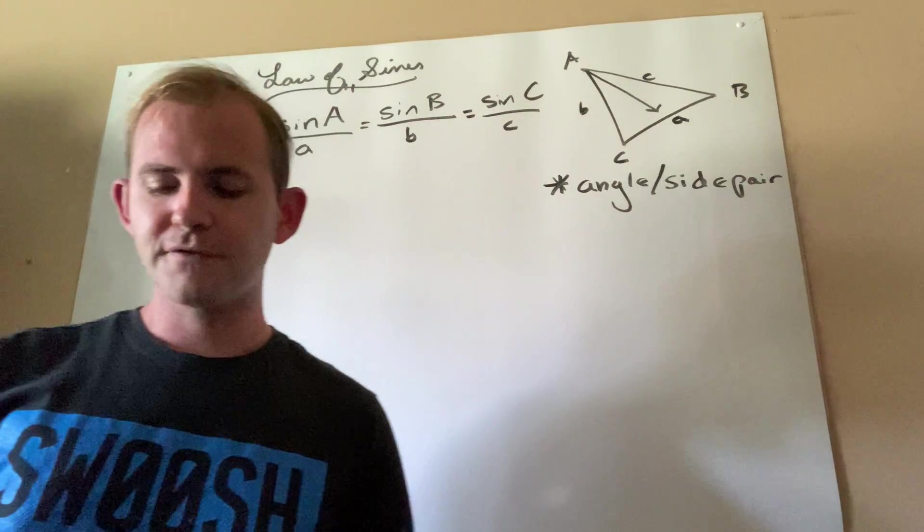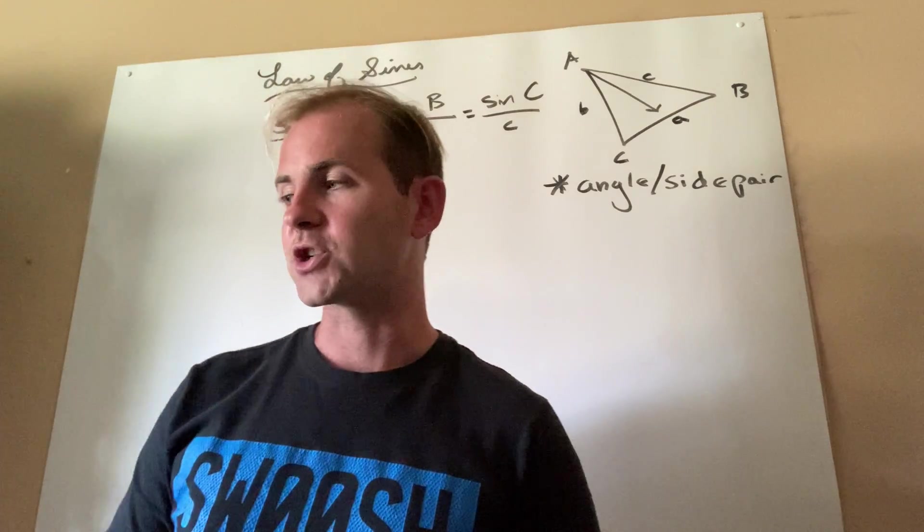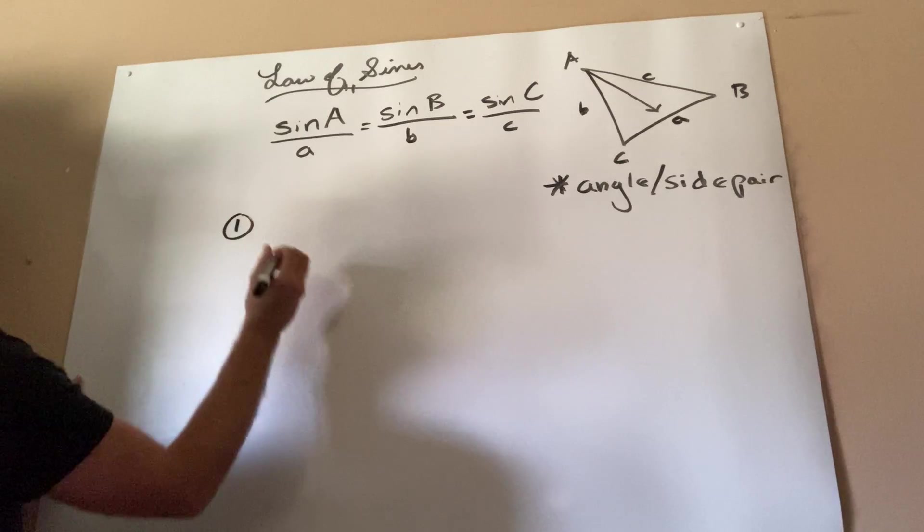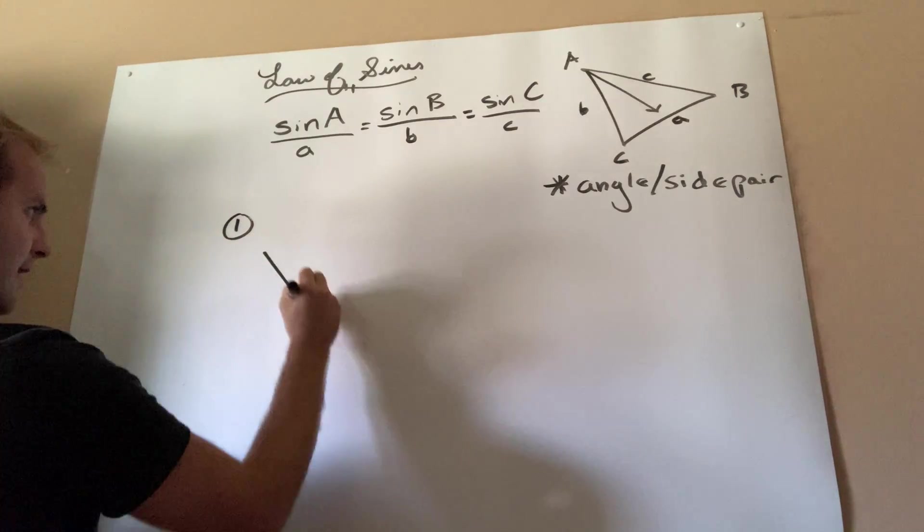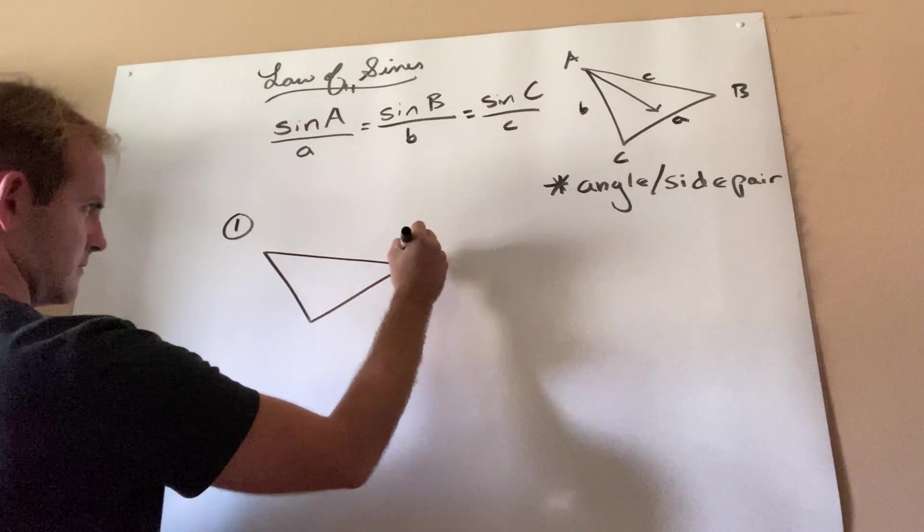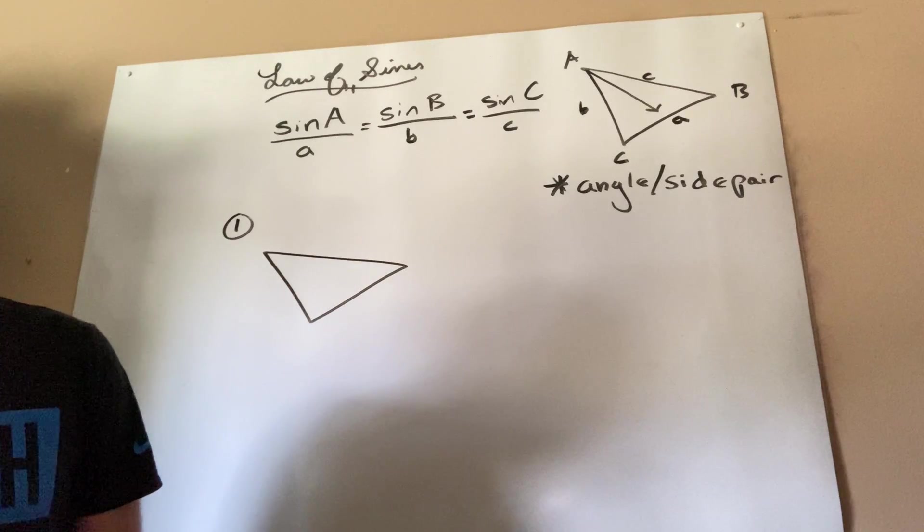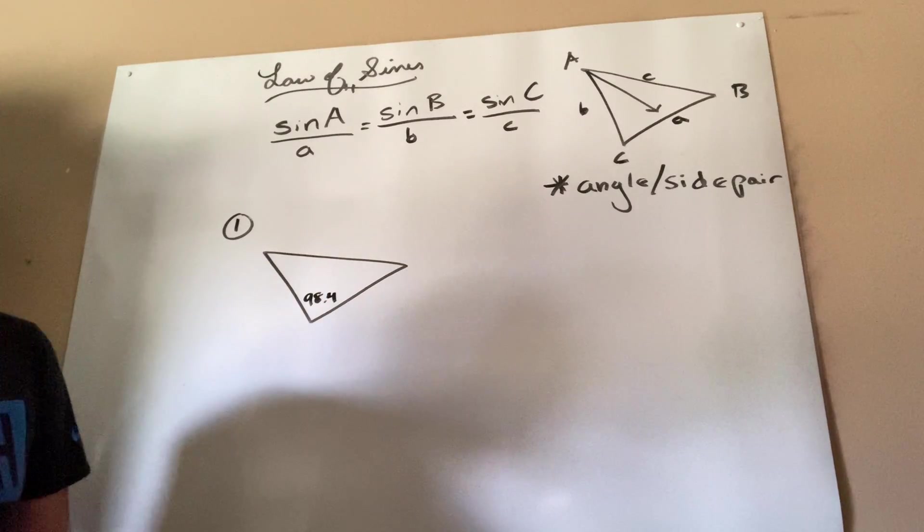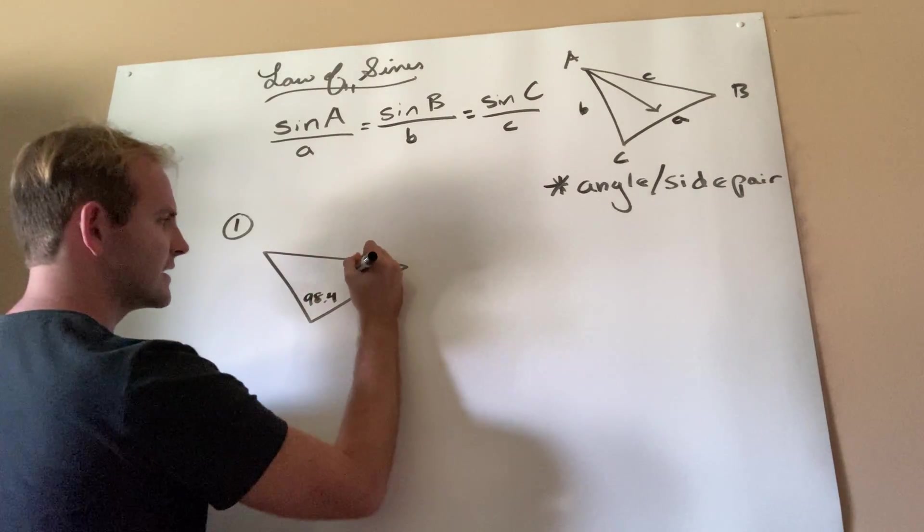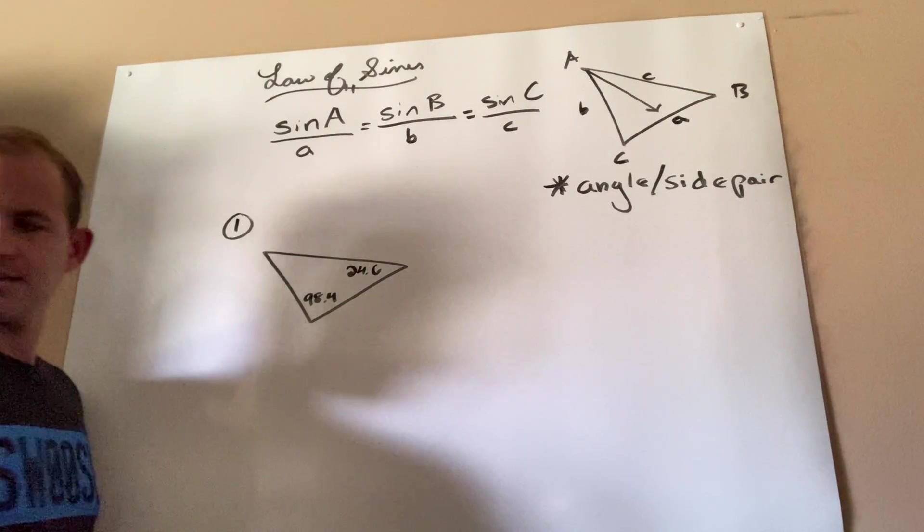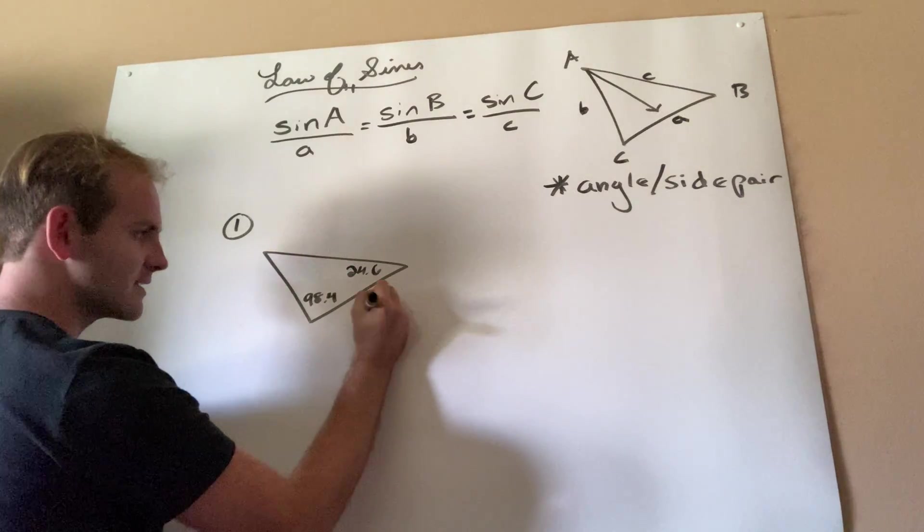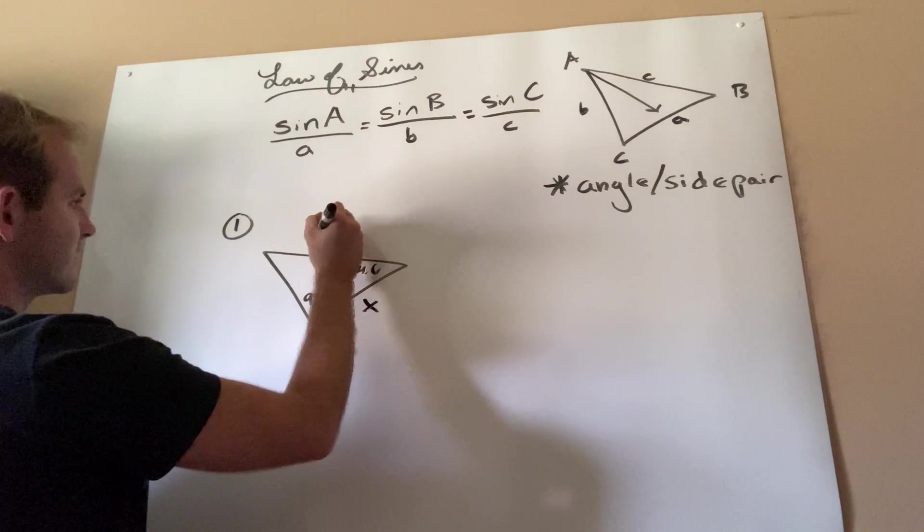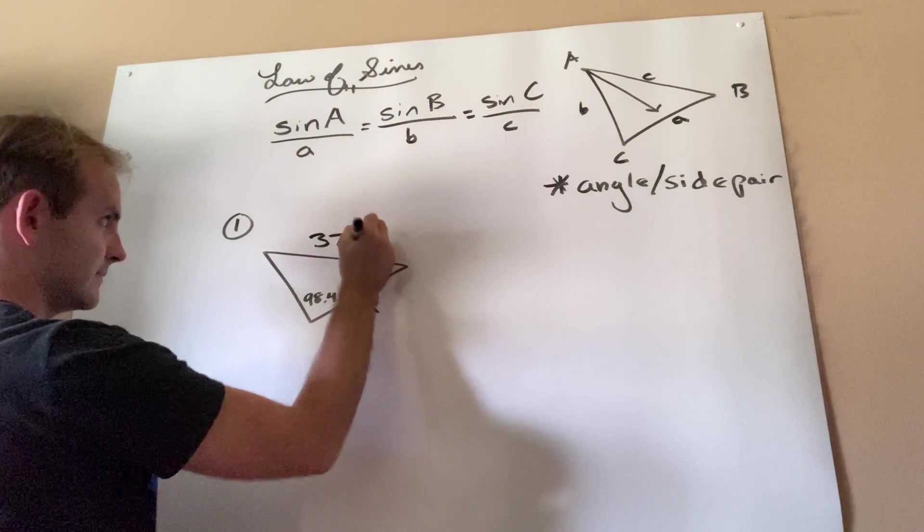Example number one from the practice worksheet. Number one looks something like this, if I remember correctly. 98.4, this is 24.6, they tell me that this over here is x, and this is 376.